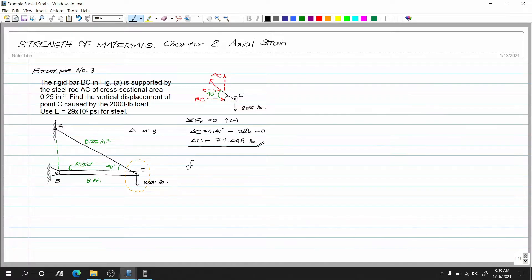So log natin yung deformation AC equals to PL over AE. Ang ating P is yung nakuha natin sa load na 3,111.448. So 3,111.448. So this is pounds. Then L. Ang L natin is, ito. Wala tayong L na given. Pero meron naman tayong given na length ng ating DC. So kunin lang natin yung L. Ito yun, yung L natin.